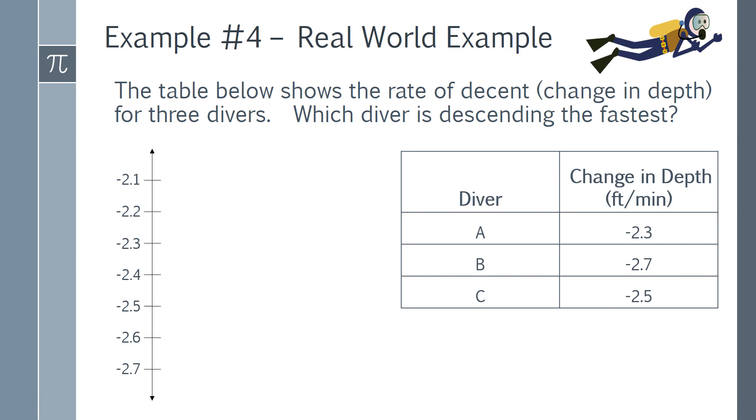We can use a vertical number line to help us solve this problem. Draw the number line, and then plot the points. Notice that negative 2.7 is at the bottom of the number line. This means that diver B is descending the fastest, with a speed of negative 2.7 feet per minute.